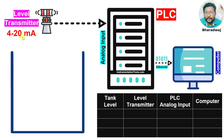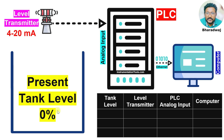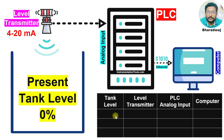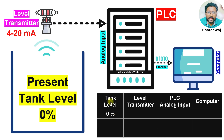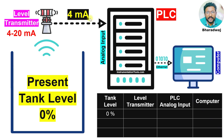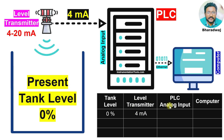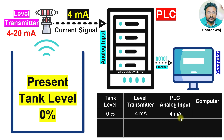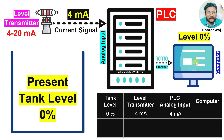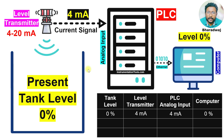The tank level is zero percent, so I will update the table here. Tank level is zero and the transmitter sends 4 milliamperes to the PLC, so transmitter output is 4 and the PLC receives 4. The computer receives zero percent level from the PLC, so computer shows zero.